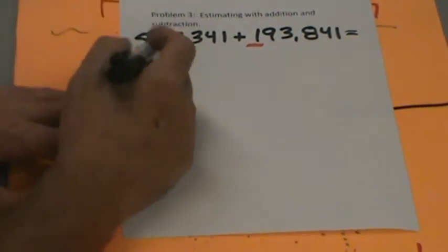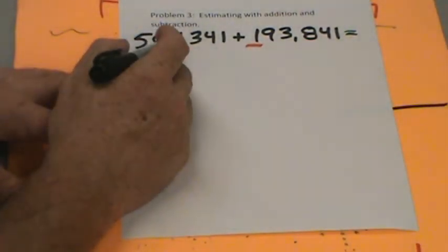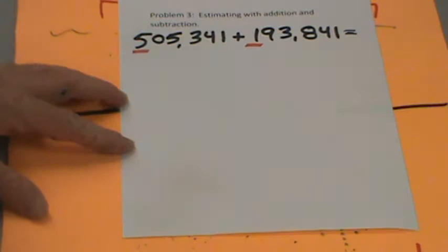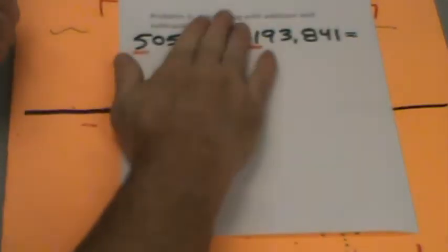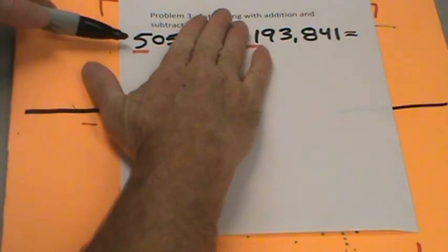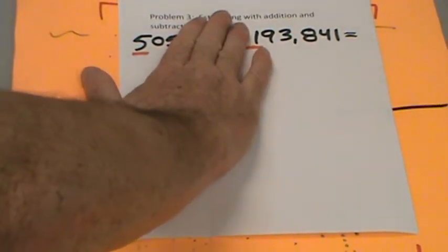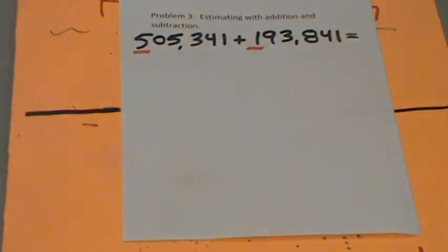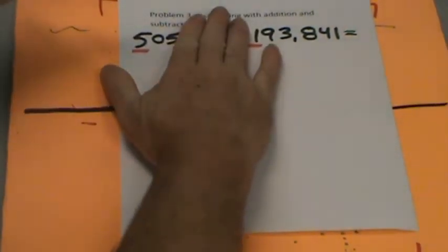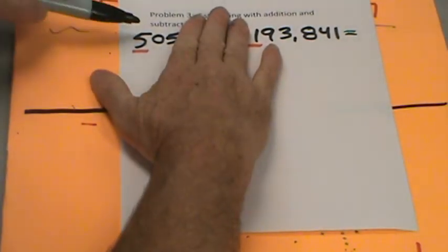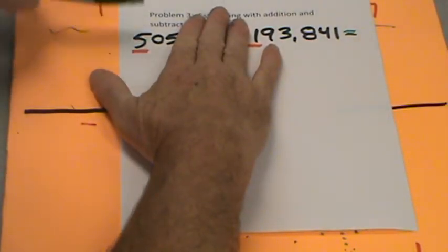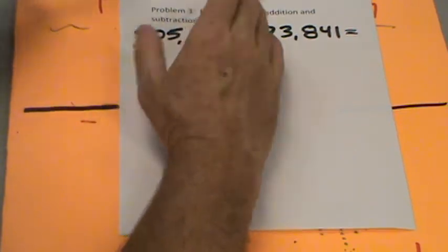Is 505,341 closer to five hundred thousand or six hundred thousand? Think about it — is five hundred five closer to five hundred or six hundred? Five hundred five is a lot closer to five hundred than it is to six hundred, would you not agree?